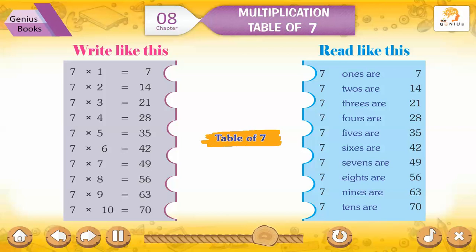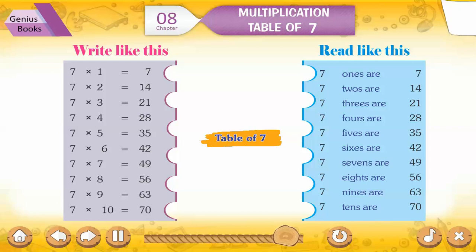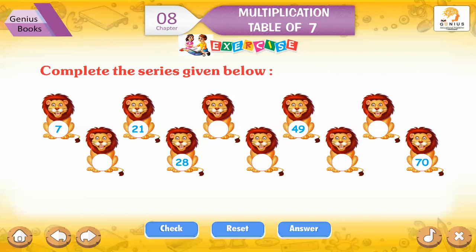7 sevens are 49. 7 eights are 56. 7 nines are 63. 7 tens are 70. Exercise.